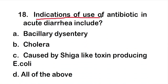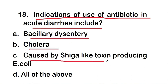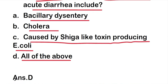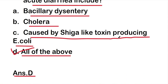Question 18: Indications for the use of antibiotics in acute diarrhea include — bacillary dysentery, cholera, Shiga-like toxin-producing E. coli, or all of the above? The right answer is option D: all of the above. All of these are indications for antibiotic use in acute diarrhea.